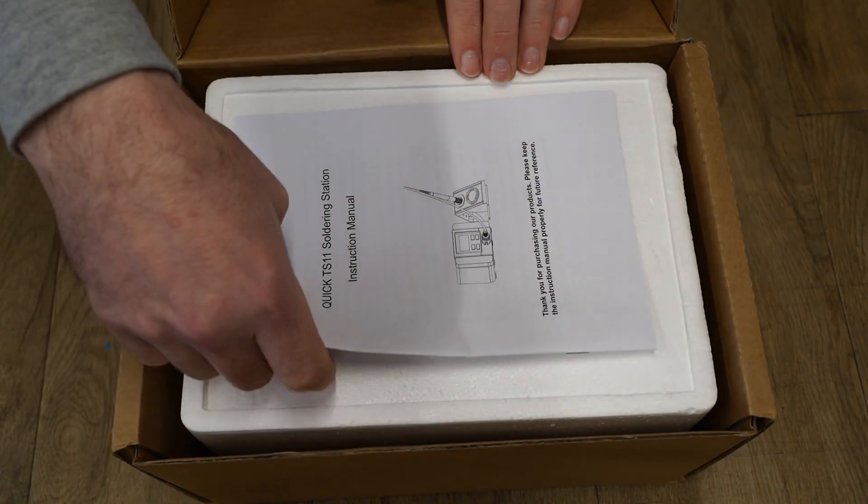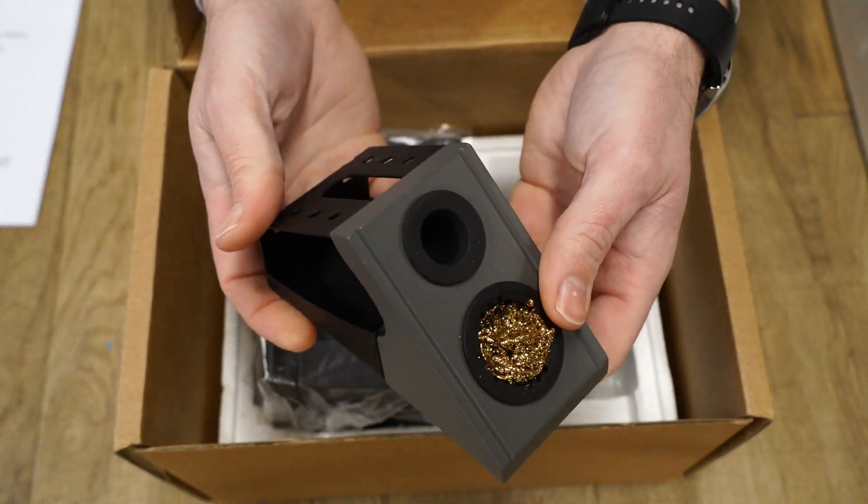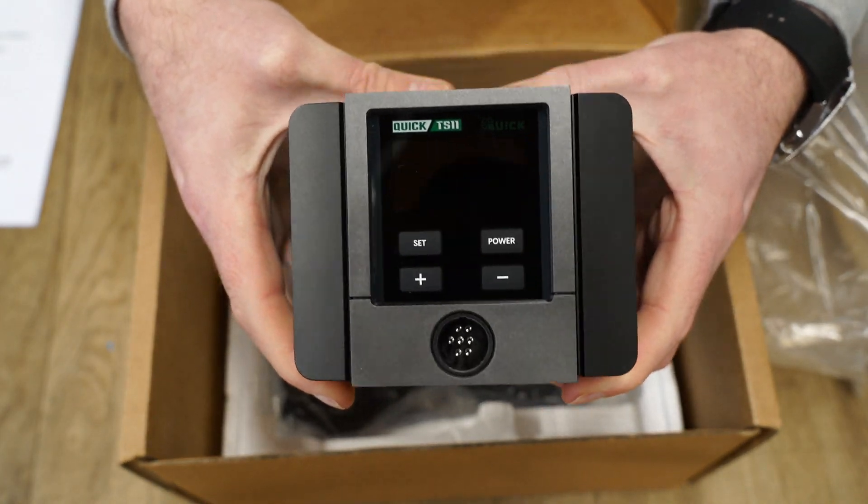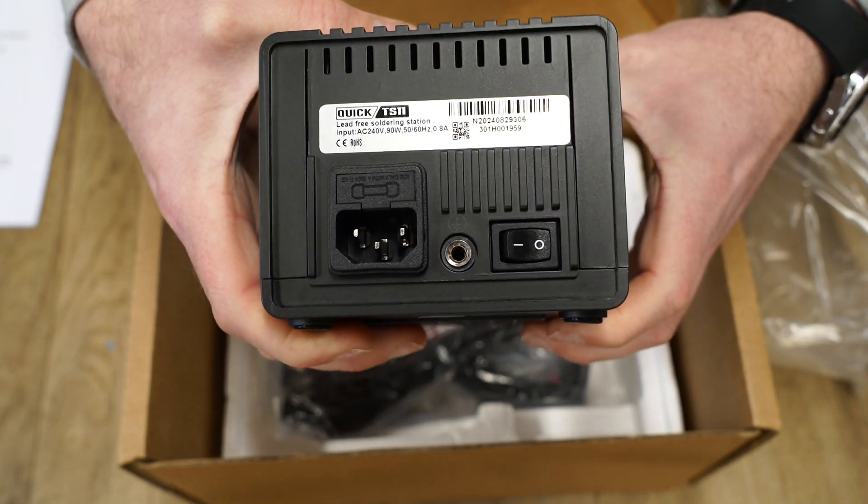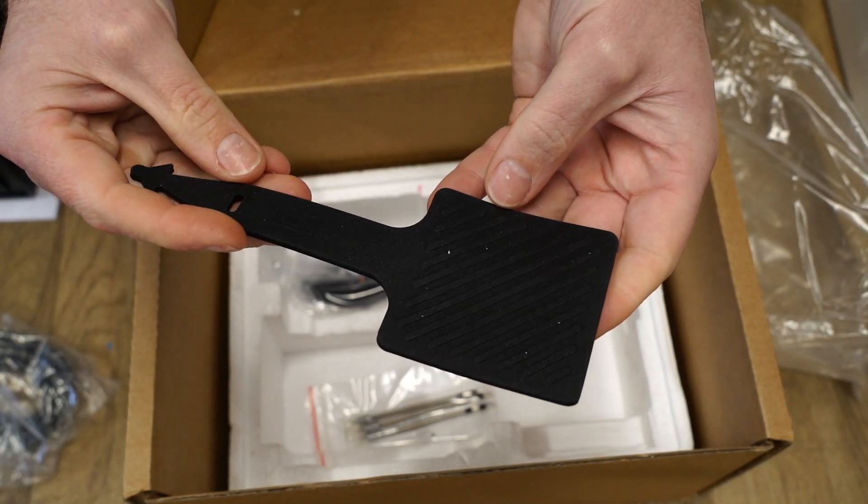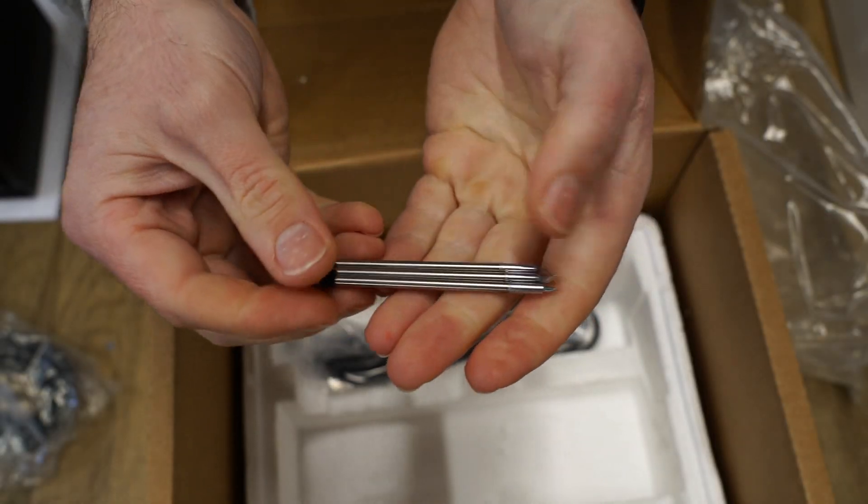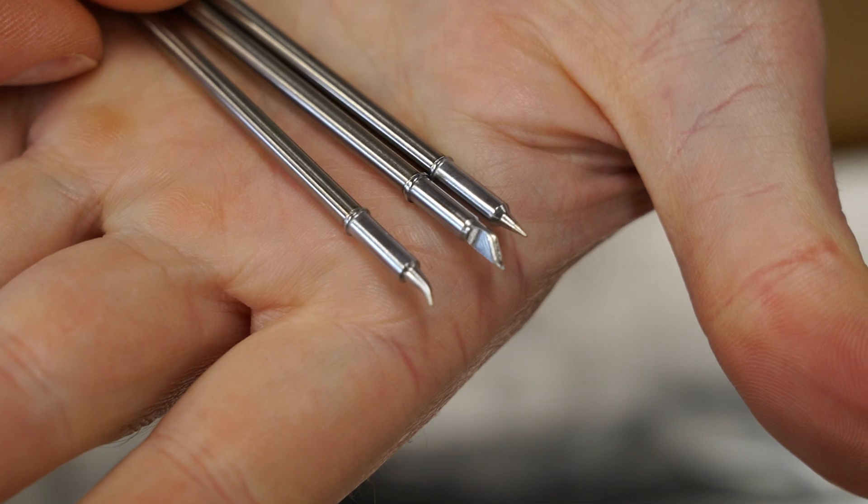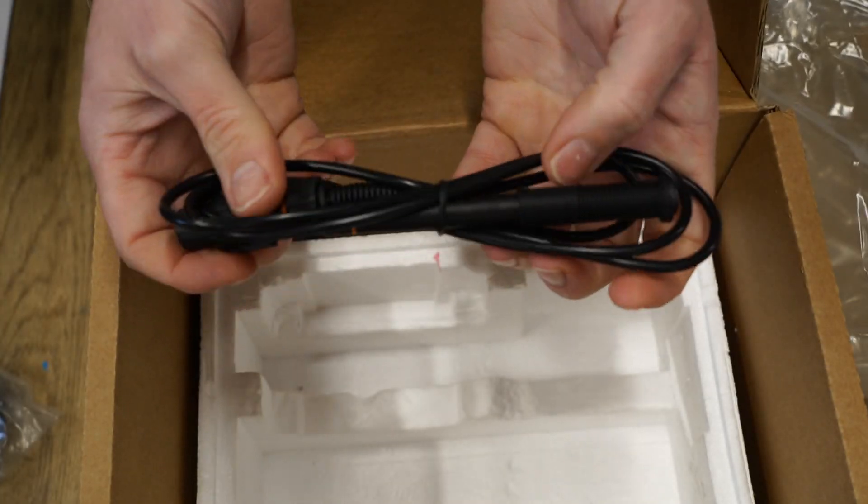Inside the box you'll find a user manual, a handpiece holder, the TS-11 station, a silicon pad for swapping tips, grounding cable, three iron tips which is great, however I would have preferred at least one of them to be a chisel tip for better variety. And lastly the handpiece.